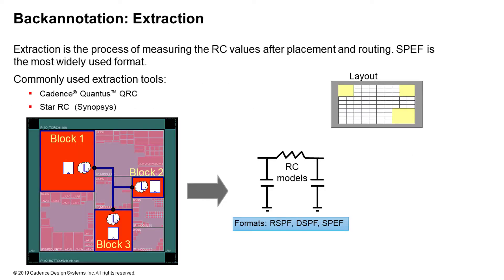Extraction tools create models for your RC network and apply reduction mechanisms to generate 2D, 3D, or 2.5D models of your layout. These reduced RC models yield RSPF, DSPF, or SPEF. SPEF is the widely used format, later converted by delay calculators into actual delays. You can feed either SDF or SPEF back into your synthesis tool; this overall process is called extraction.